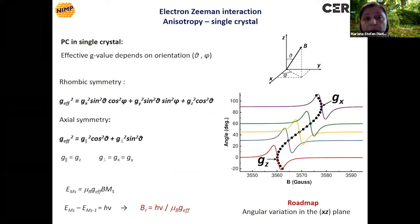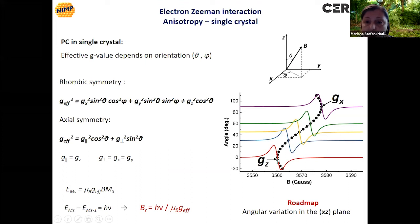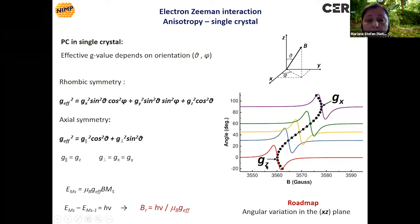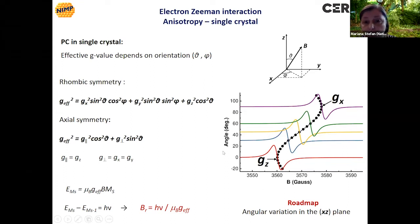Information about the orientation of the G tensor can be obtained only from a single crystal experiment. In this case, the single crystal sample is inserted between the poles of the electromagnet and rotated with respect to the magnetic field. For each orientation, a spectrum is recorded; we measure the resonance field and calculate the effective G value for that transition. When we plot all the resonance fields against the orientation, they follow a sinusoidal line, and the extrema correspond to the main values of the G tensor. This kind of variation is called a roadmap.